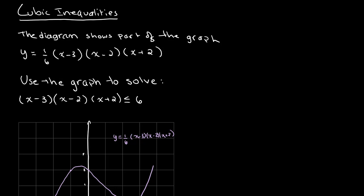Over here we have a question that states the diagram shows a part of the graph y = (1/6)(x − 3)(x − 2)(x + 2), and we have to use the graph to solve the inequality (x − 3)(x − 2)(x + 2) ≤ 6. We can look at the graph over here.